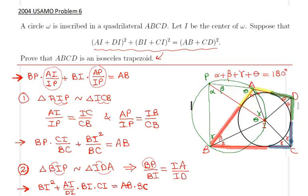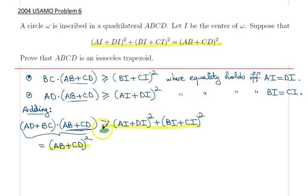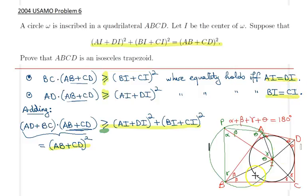We are now in an interesting situation: we found that (AB + CD)² ≥ (BI + CI)² + (AI + DI)². However, the problem's given condition tells us (AB + CD)² actually equals the sum of these two squares. This implies all inequalities hold as equalities. Therefore AI = DI and BI = CI.